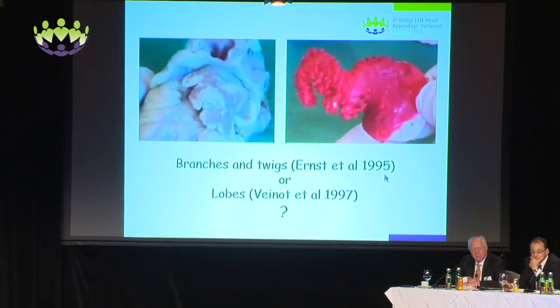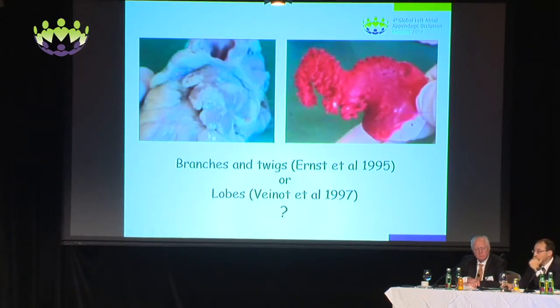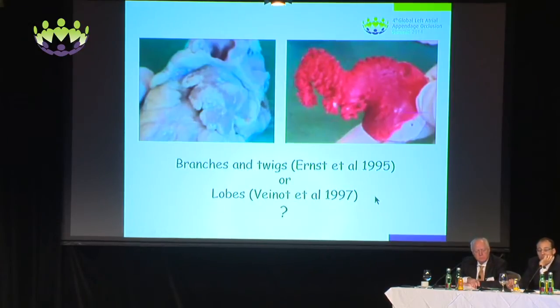In terms of branches and twigs or lobes — if you look at it from the outside, it looks more like lobes, but from the inside, endocast or CT imaging probably look more like branches and twigs.